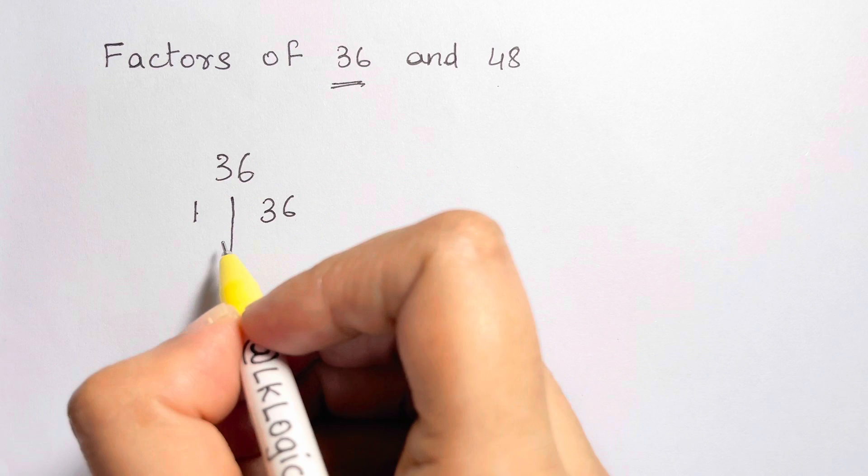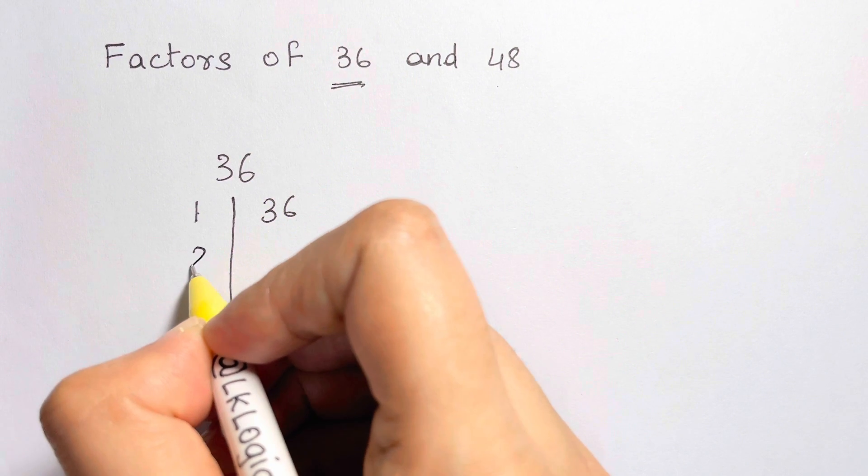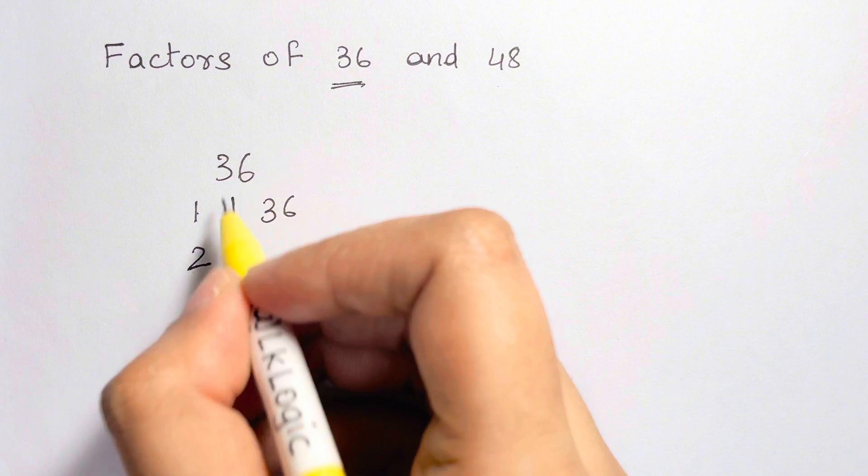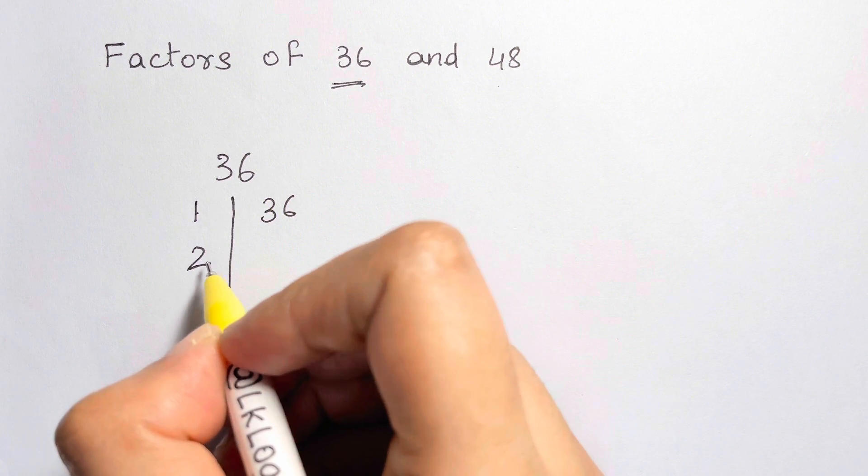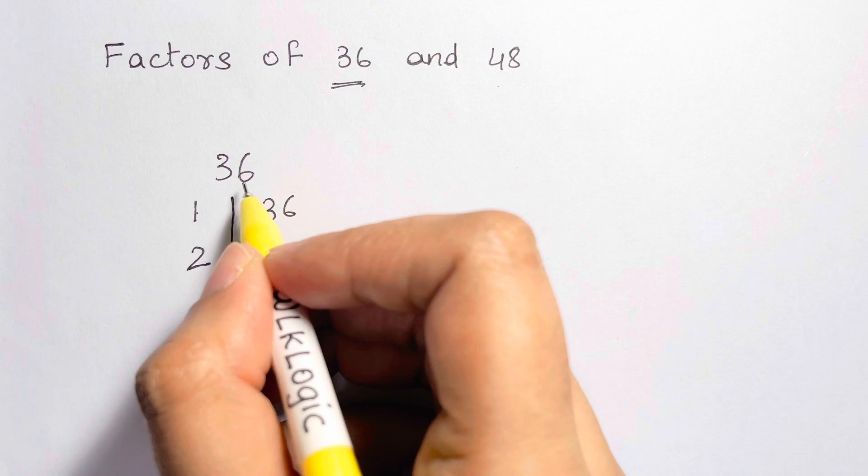Now, the next number after that, 2. Is 36 divisible by 2? Yes. So, I'm going to take 2. So, 36 divided by 2 is 18. And 2 times 18 gives me 36. That's what I got.